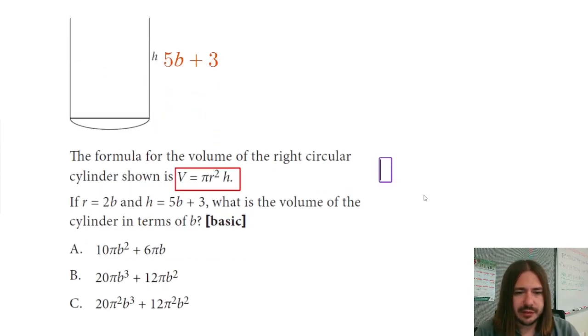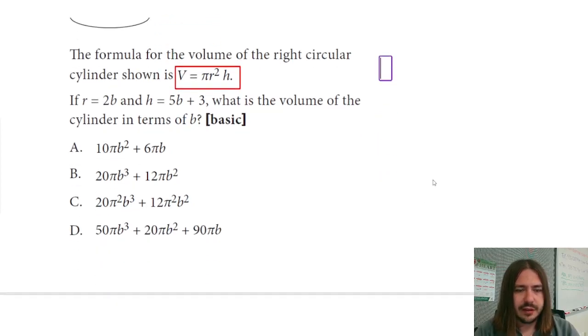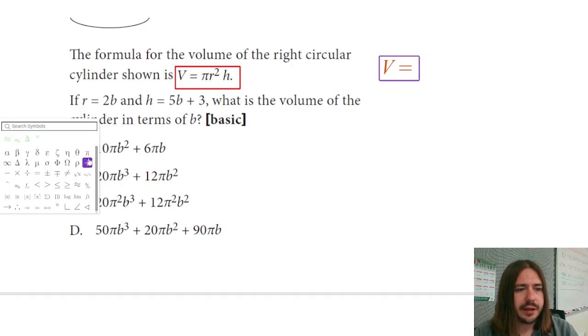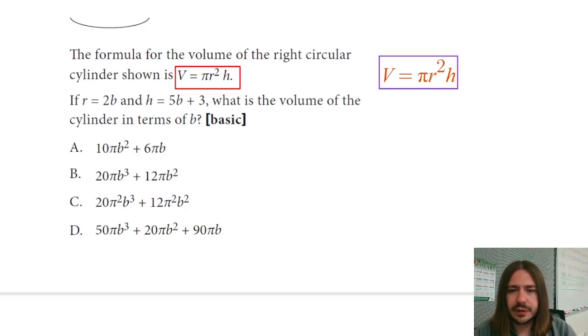So let's start here, and we'll say that volume is pi r squared h. So pi times the radius squared times the height. And let's go ahead and substitute in our expressions in terms of b.